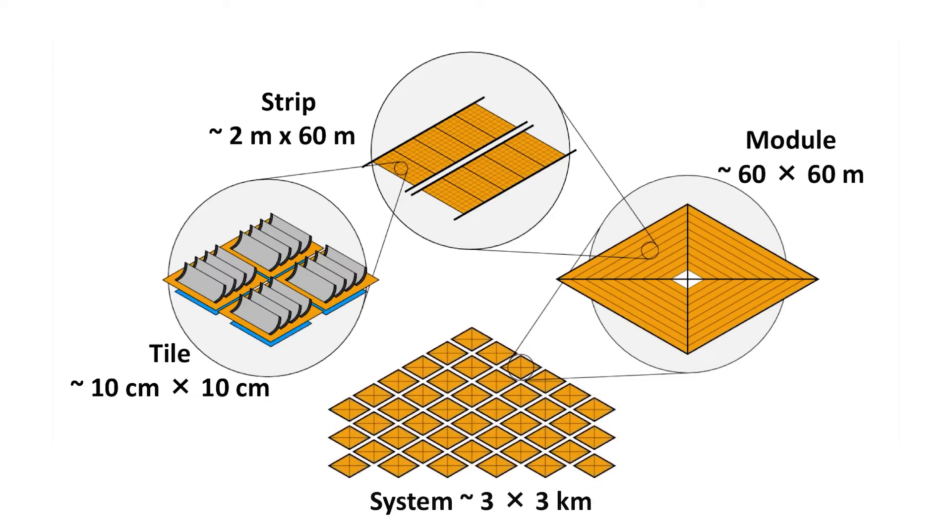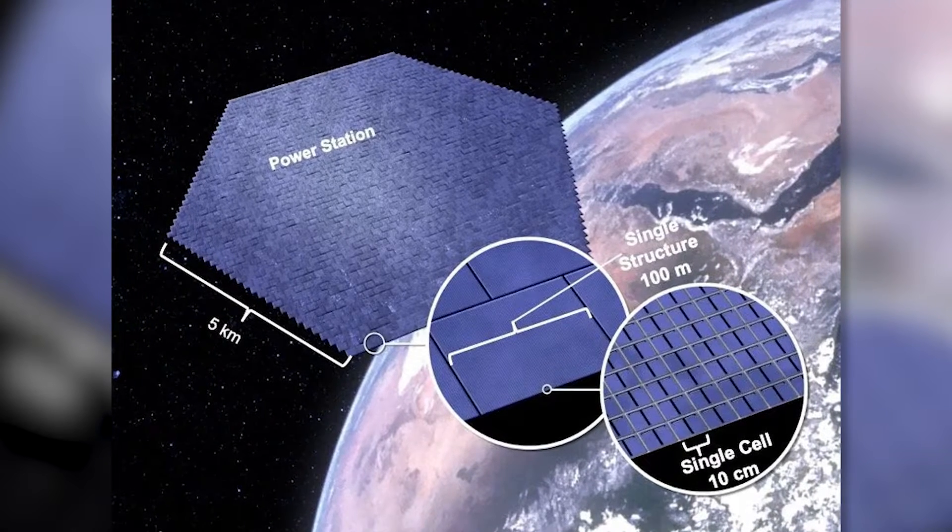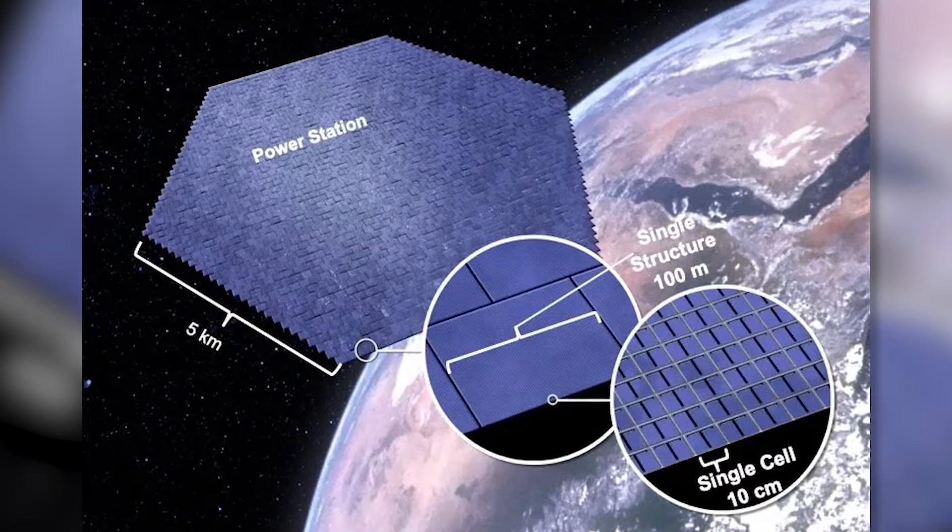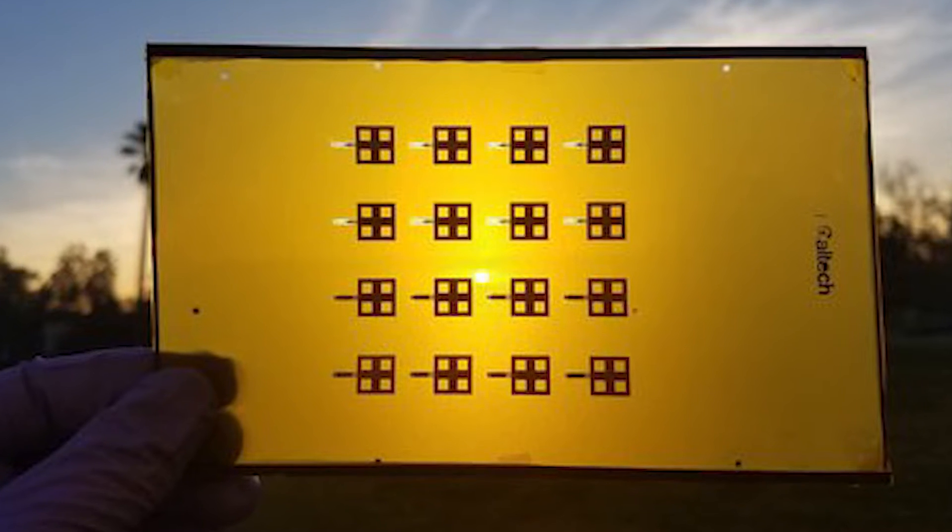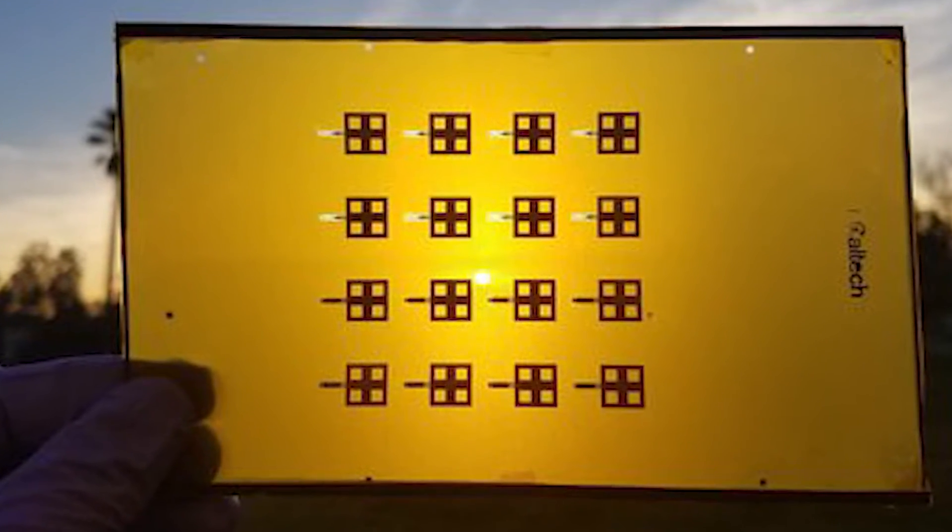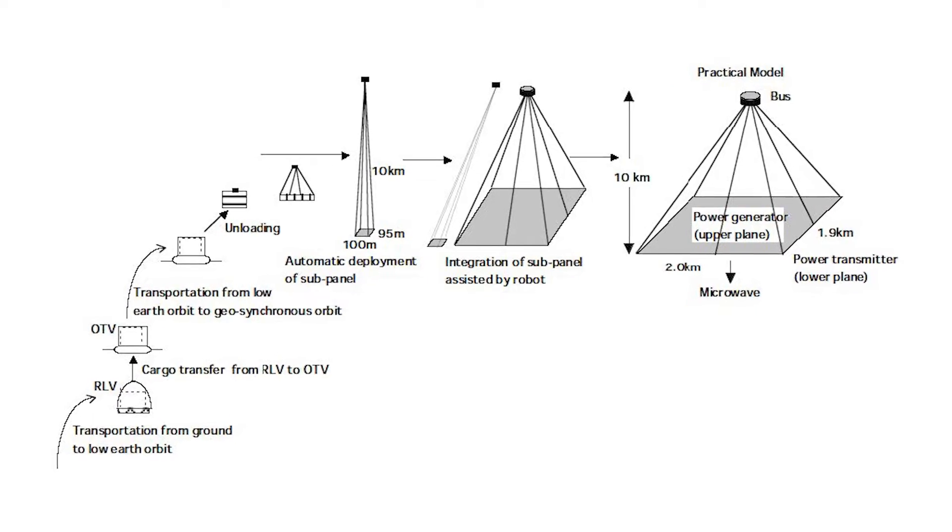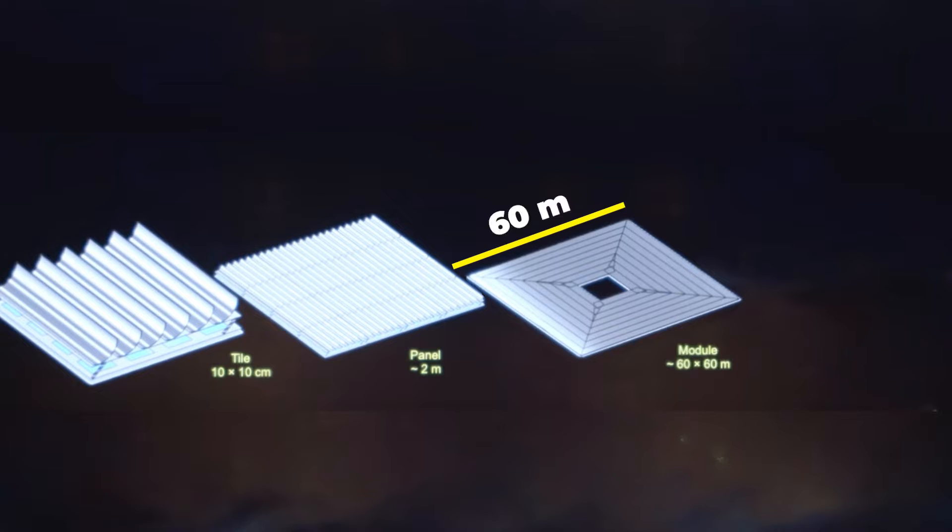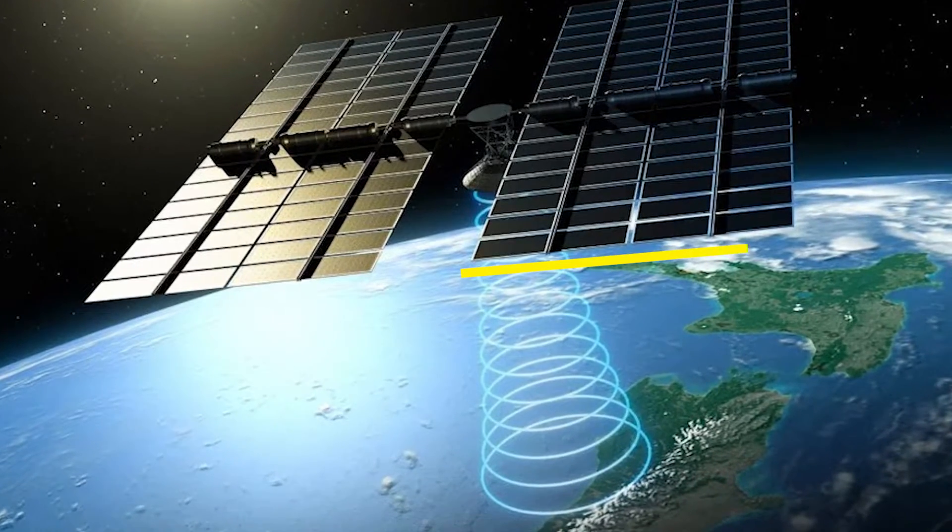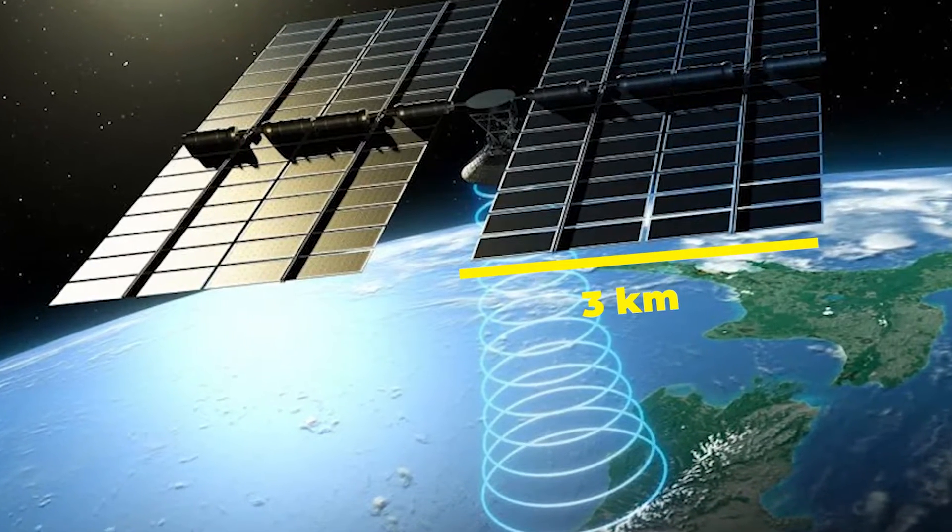These tiles, the building blocks of the Caltech design, can be as small as a mere dessert plate measuring only a hundred square centimeters. The brilliance of the Caltech design lies in each tile being its own mini solar station, boasting photovoltaics, minuscule electronic components, and a microwave transmitter. These tiles come together to form larger modules, each measuring 60 square meters, and an impressive array of thousands of these modules creates a hexagonal power station spanning up to three kilometers on each side.